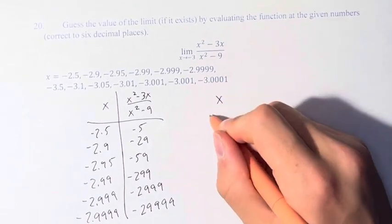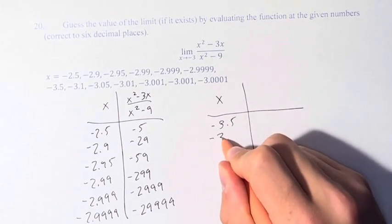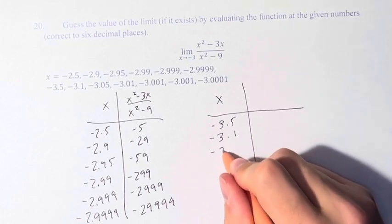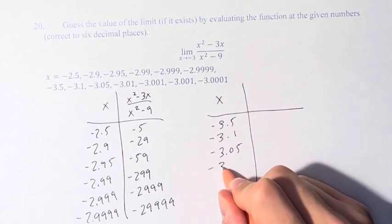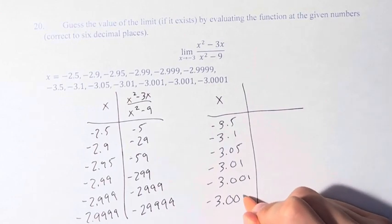And next we have to do all the values approaching from the left. So negative 3.5, negative 3.1, negative 3.05, negative 3.01, negative 3.001, and negative 3.0001.